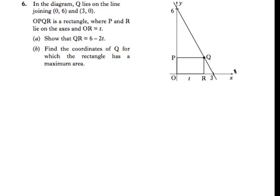Question 6, 2008 Higher Maths Paper Two. There's a diagram given: Q lies on the line that joins (0,6) and (3,0), so Q is on this line and we've got a rectangle OPQR formed with the origin and the point Q as opposite points in this rectangle. We're asked a whole lot of things, but looking ahead to part B, we're asked to find the coordinates of Q.